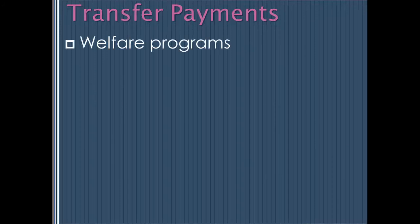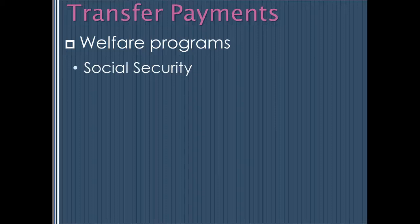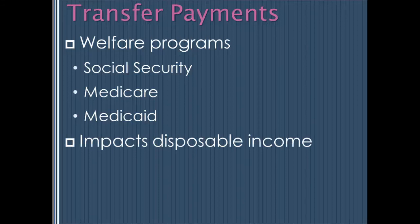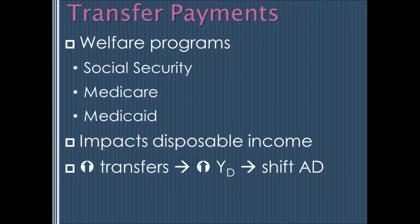Transfer payments are essentially welfare programs — taking tax money from one individual, typically a higher earner, and transferring it to someone who earns less. This includes Social Security, a transfer to the elderly from the young; Medicare, a transfer for healthcare from the young to the old; and Medicaid, a transfer from high-income earners for medical help to low-income earners. Transfer payments affect people's disposable income just like taxes. An increase in transfers raises disposable income for recipients, shifting aggregate demand right; a decrease does the opposite.